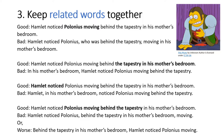Guideline 3: Keep related words together. Closely related to concerns about how words are organized is the principle of phrasing sentences so that closely related elements are syntactically adjacent to one another. In the good version: 'Hamlet noticed Polonius moving behind the tapestry in his mother's bedroom.' In the bad version: 'Hamlet noticed Polonius, who was behind the tapestry, moving in his mother's bedroom.' The good sentence keeps all one important unit together, while the bad version breaks it up.